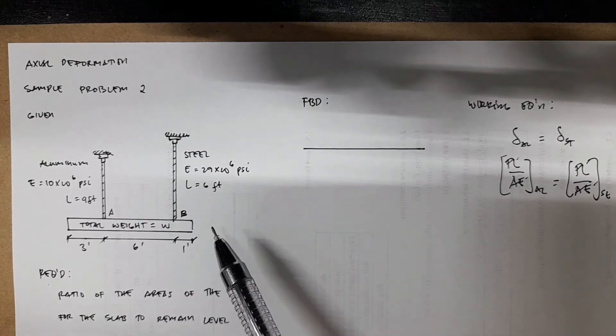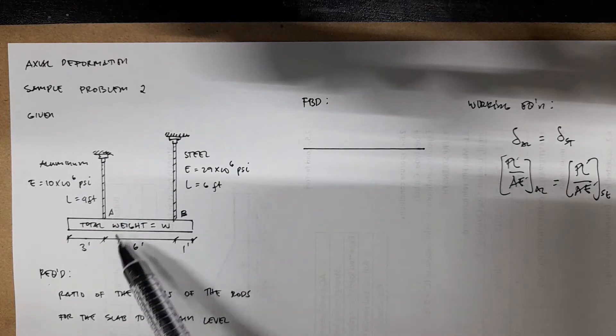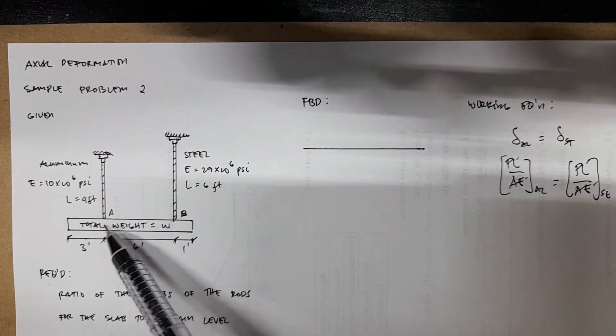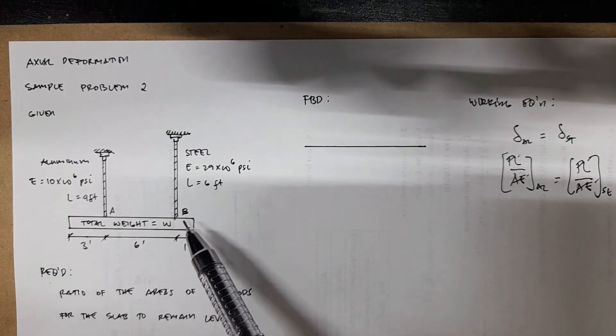We have another example for axial deformation. Here we have a slab supported at points A and B by an aluminum rod and at point B by a steel rod.